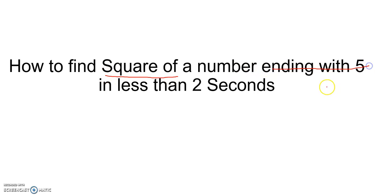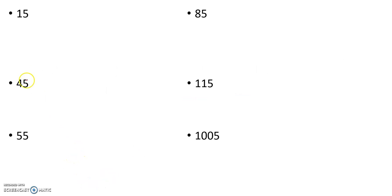In this version I'll show you how to find the square of a number ending with digit 5 in less than 2 seconds. I'll be solving some examples using the same trick.